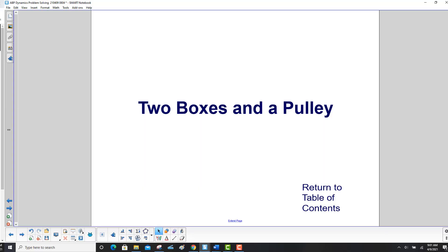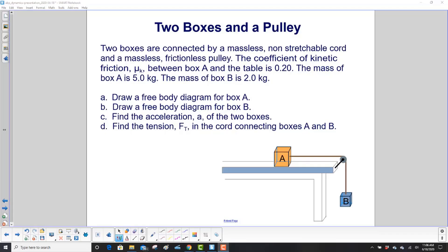Two boxes and a pulley. Two boxes are connected by a massless, non-stretchable cord and a massless, frictionless pulley. The coefficient of kinetic friction between box A and the table is 0.20, which tells you we're going to deal with friction here.